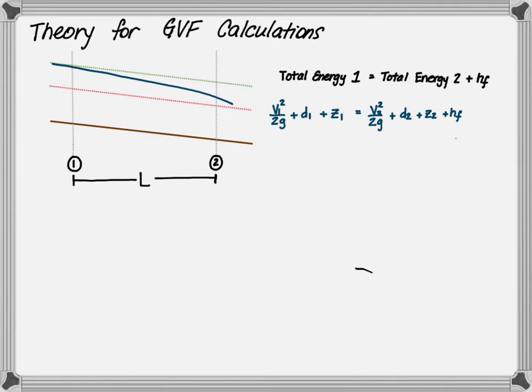The total energy is the velocity head plus the water surface depth plus the elevation. Remember that velocity head plus water depth is your specific energy, so we can identify E1 and E2. Z1 and Z2 give us delta Z.